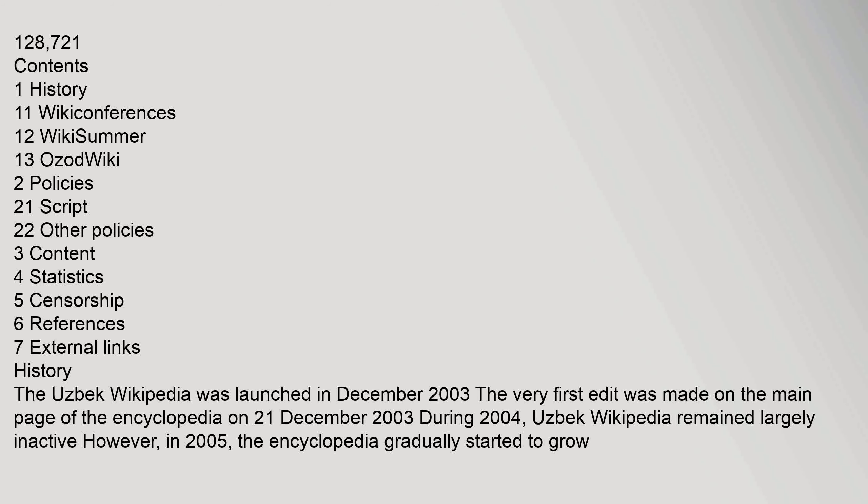The Uzbek Wikipedia was launched in December 2003. The very first edit was made on the main page of the encyclopedia on 21 December 2003. During 2004, Uzbek Wikipedia remained largely inactive. However, in 2005, the encyclopedia gradually started to grow.